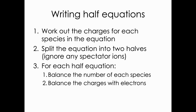Pause the video and have a go at the second Teams assignment, which covers identifying oxidation or reduction based on electrons. After that, we'll look at the most difficult part — writing half equations. To write half equations we use a three-step process: work out the charges for each species in the equation, split the equation into two halves ignoring any spectator ions, and then balance each half equation by balancing the number of each species and balancing the charges by adding electrons.